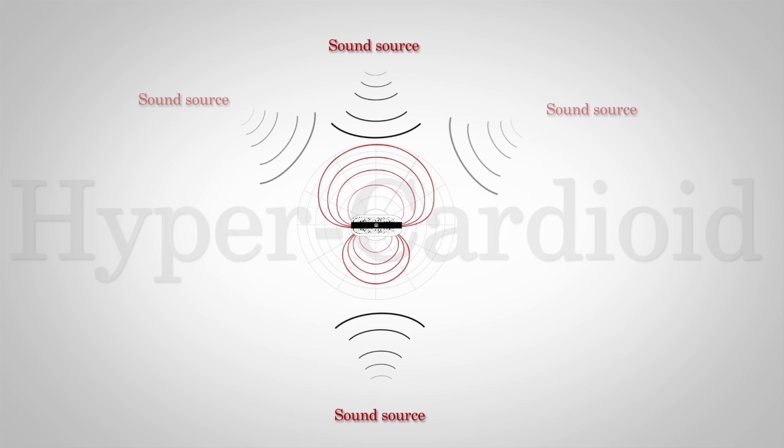Hypercardioid is a variant of cardioid which is more directional. Like cardioid, it primarily picks up sound from in front of the mic, but in a tighter and more focused pattern. This option is used less in the studio and more often for live sound.